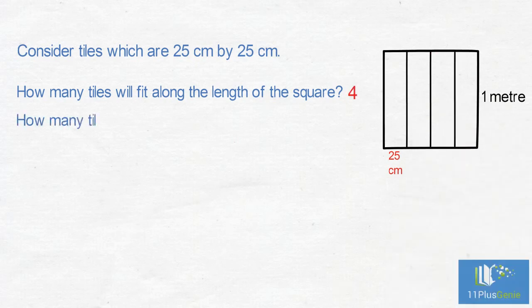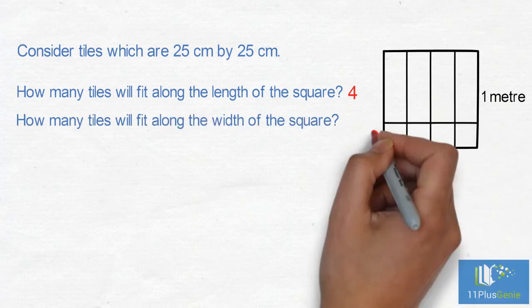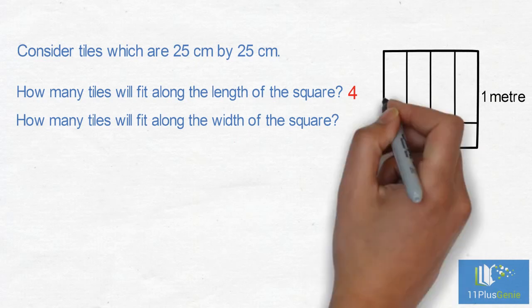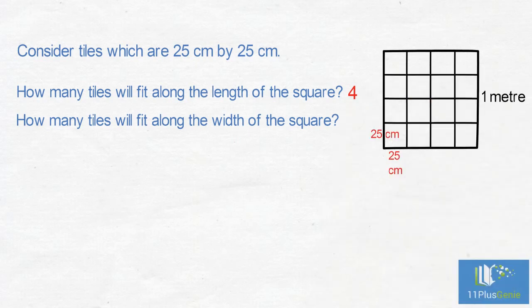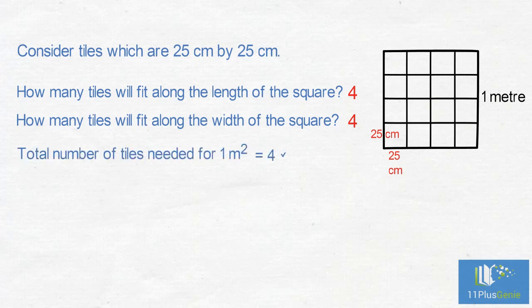How many tiles of 25cm can fit along the width of the square? Again, four tiles fit along the width. Therefore the total number of tiles needed for 1m² is 4 x 4 which equals 16 tiles.